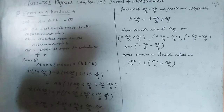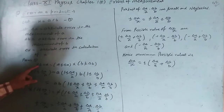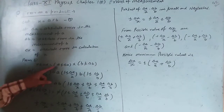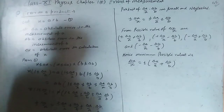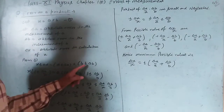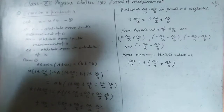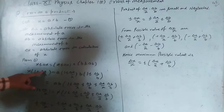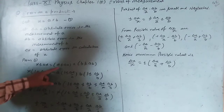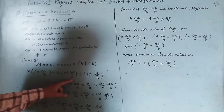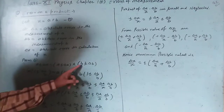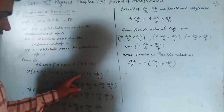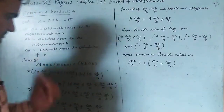From equation 1, x plus minus delta x equals (a plus minus delta a) times (b plus minus delta b). Taking x common and dividing both sides by x gives 1 plus minus delta x upon x. Similarly, taking a and b common gives (1 plus minus delta a upon a) times (1 plus minus delta b upon b).